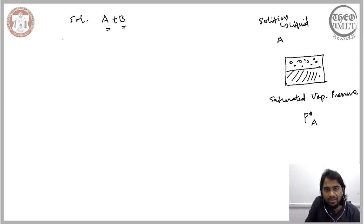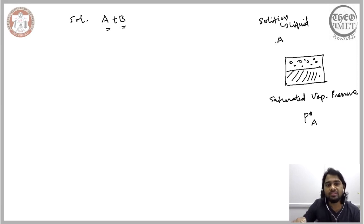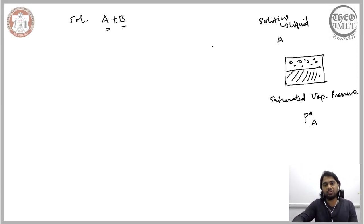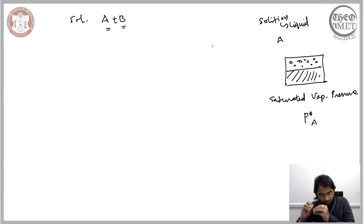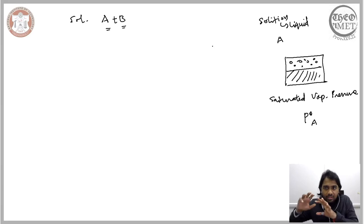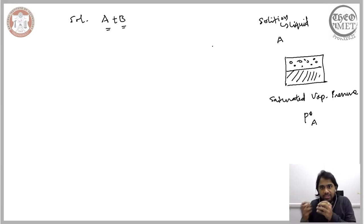When we consider the solution of A and B and compare it with pure liquid A, the key difference is that the amount of A atoms present in the A-B solution is relatively less than in pure liquid A, because certain portions of A are replaced to accommodate B.